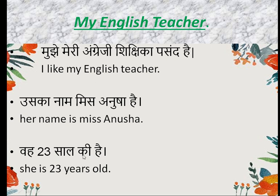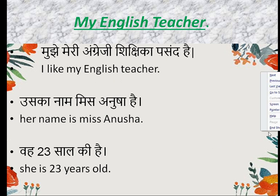Vahe 23 saal ki hai. For 'vahe' we will use 'she' here because she is a girl, that is why the pronoun 'she' is used. 'Hai' means 'is,' tees means 23, 'saal' means 'years.' So the complete sentence will be: She is 23 years old.